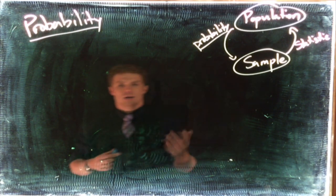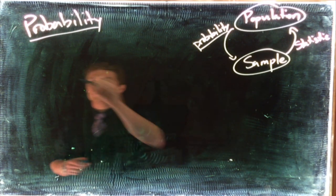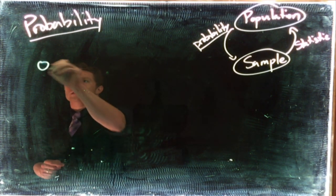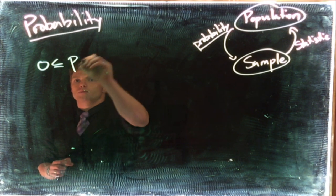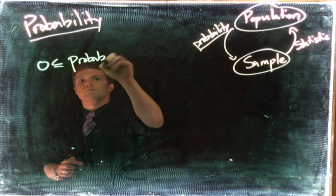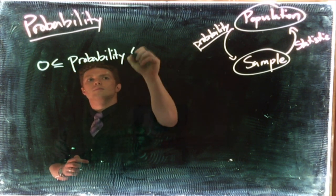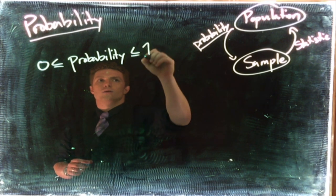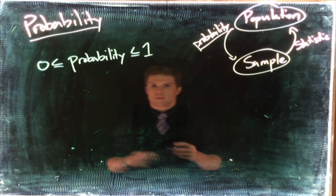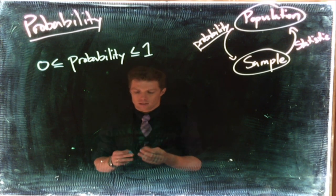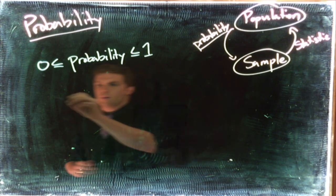And we can talk about those things. So we know that a probability has to be greater than or equal to zero and less than or equal to one. So 0 ≤ probability ≤ 1—that defines what a probability is. When we talk about probability...